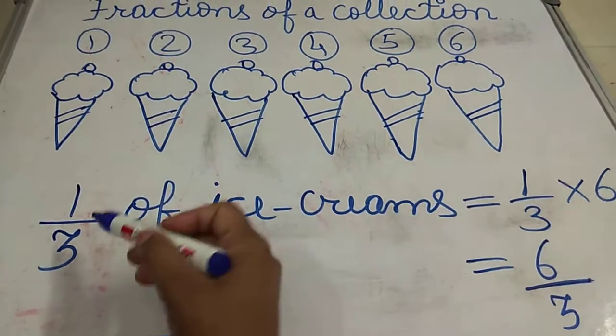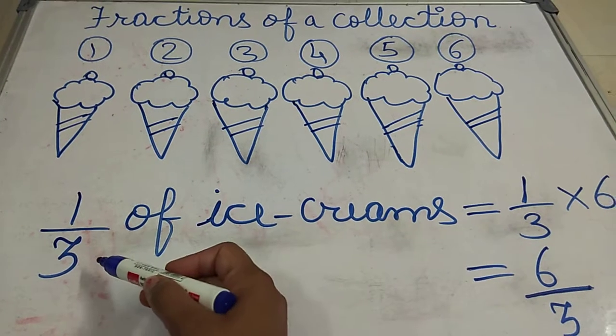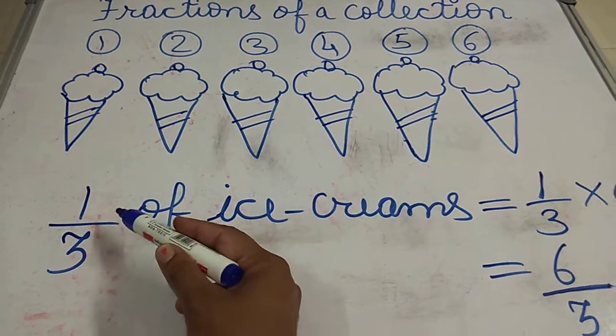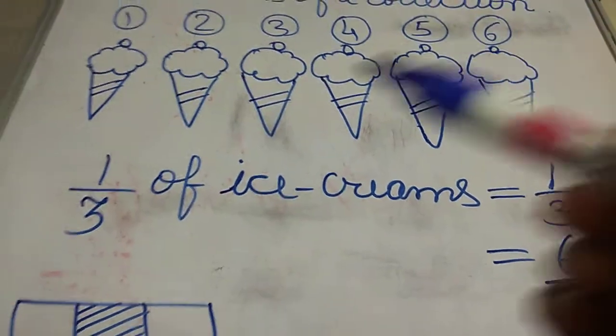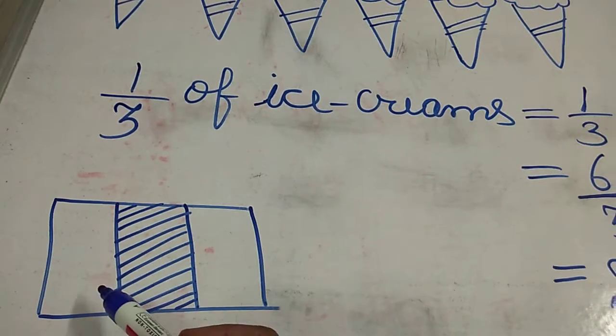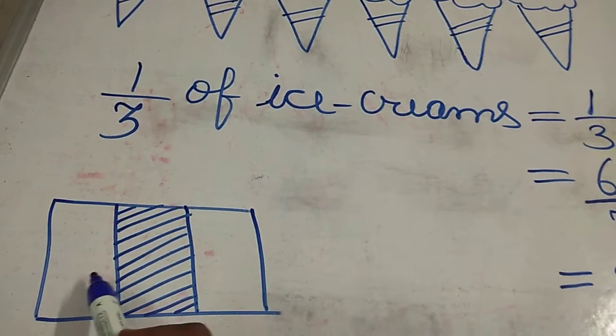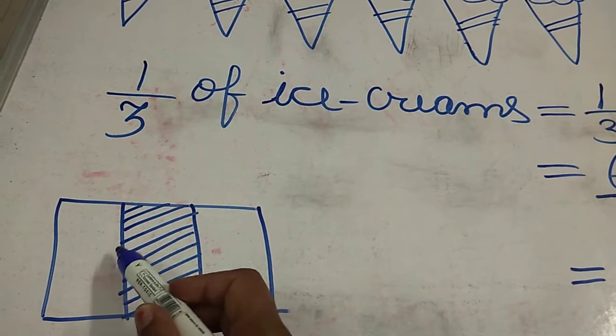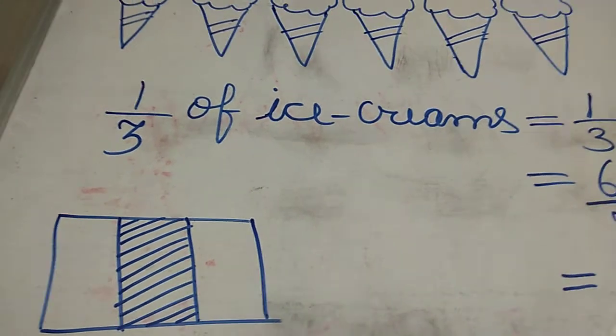One third means what? One as the numerator and three as the denominator, it can be read as one third. So what is the meaning of one third? If I say in the form of picture it is very easy. One third means what? There must be three parts and out of which one is shaded.